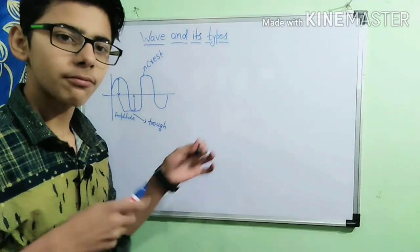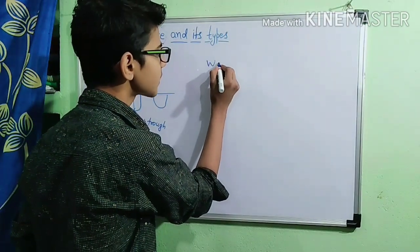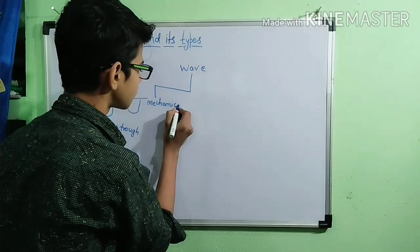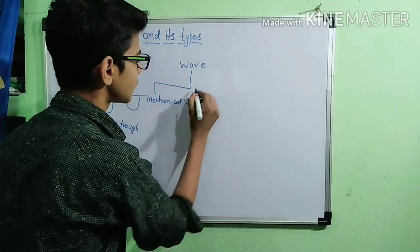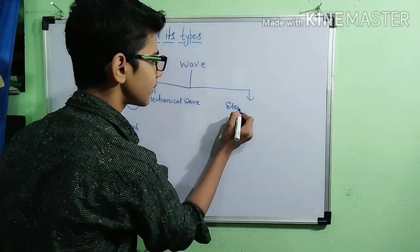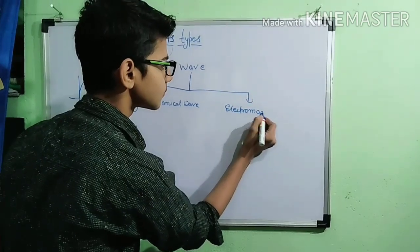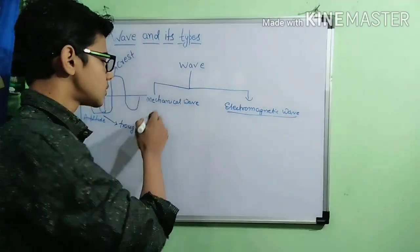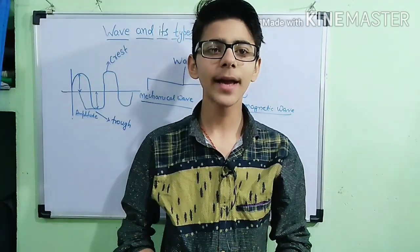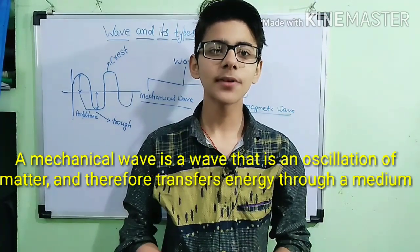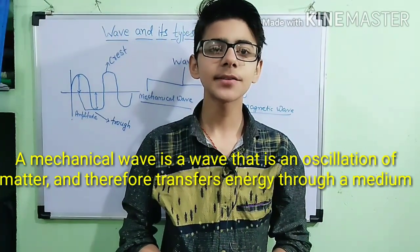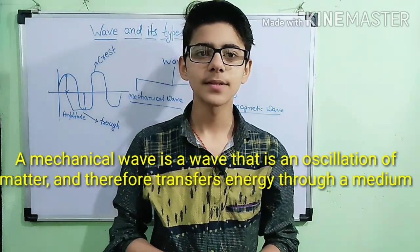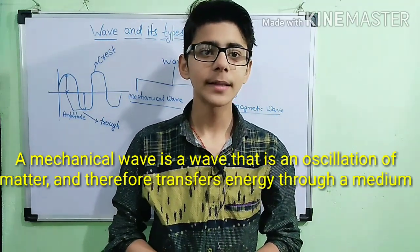Wave is categorized into two types: first, mechanical wave, and second, electromagnetic wave, which is also known as non-mechanical wave. A mechanical wave is a wave which is not capable of transmitting its energy through vacuum — it can travel through all three mediums but cannot transmit energy through vacuum. An example of a mechanical wave is sound waves.